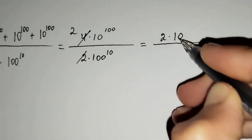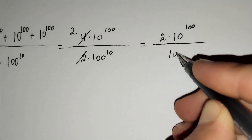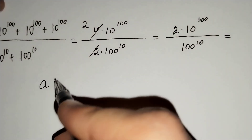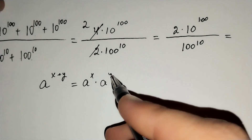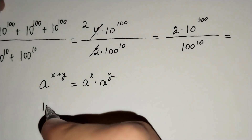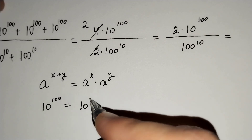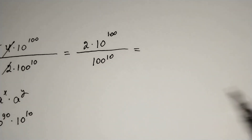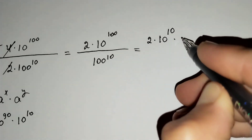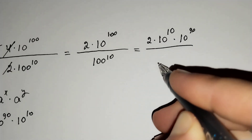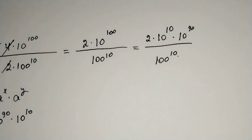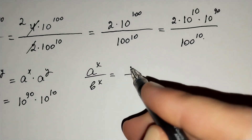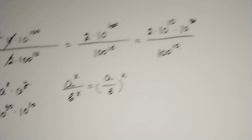We know that a power x plus y equals a power x times a power y. Using this formula, 10 power 100 equals 10 power 90 times 10 power 10. So we have 2 times 10 power 10 times 10 power 90 over 100 power 10. And we know that a power x over b power x equals a over b, all to the power x.